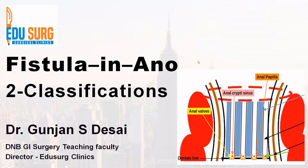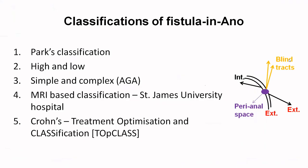If you have seen our previous video, we discussed the various definitions and the parts or anatomy of a fistula. We saw the internal and external openings, what is a blind tract, the various perianal spaces, and we ended our discussion on the slide which shows the various classifications of fistula in ANO.